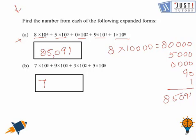Here it is 7. There is no digit for 10 raised to the power 4, so we will put the 0 for that. It is 9, 3. There is no digit for 10 to the power 1, so it is 0 again. It is 5. So, this is the answer.